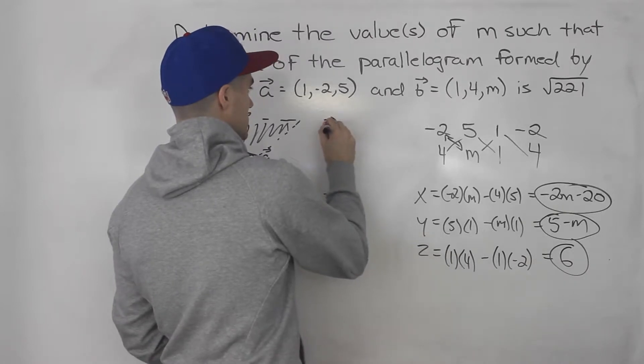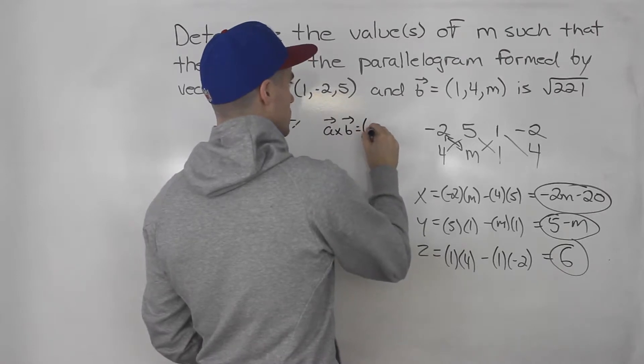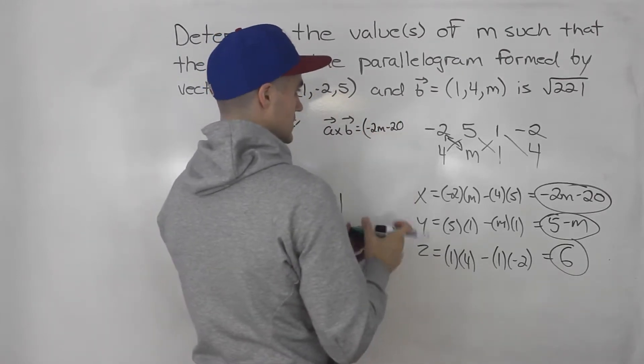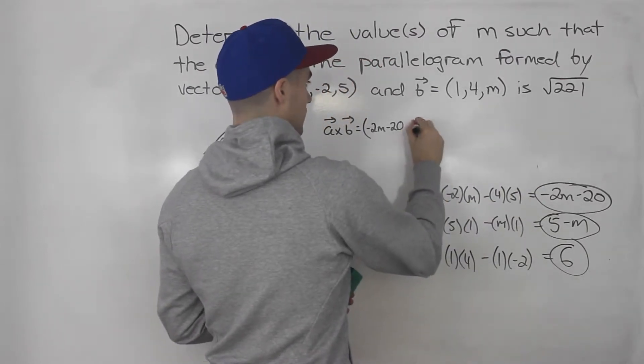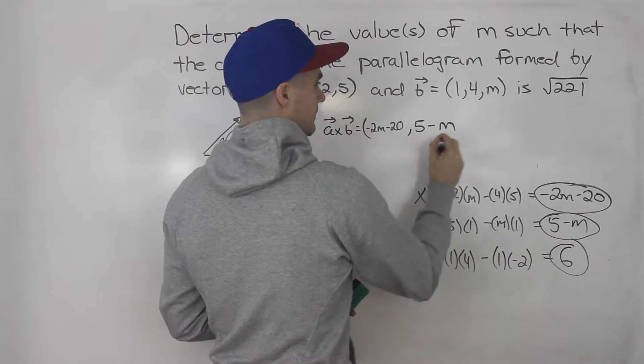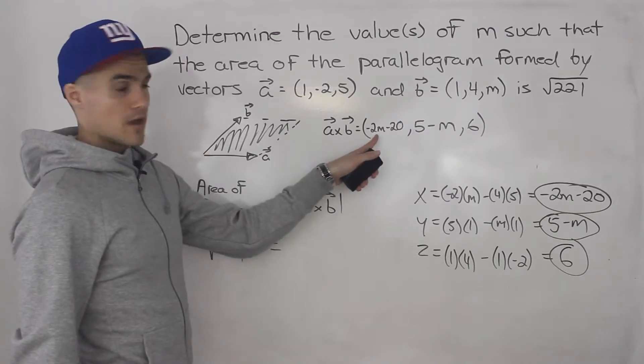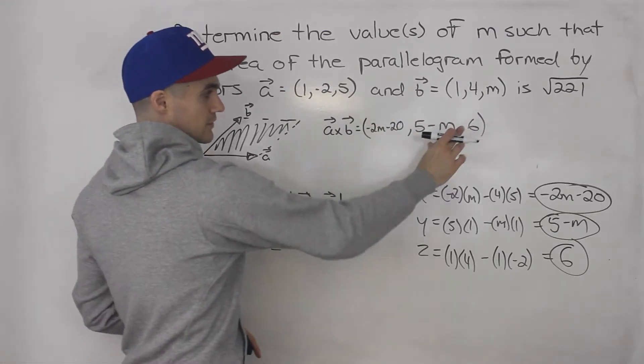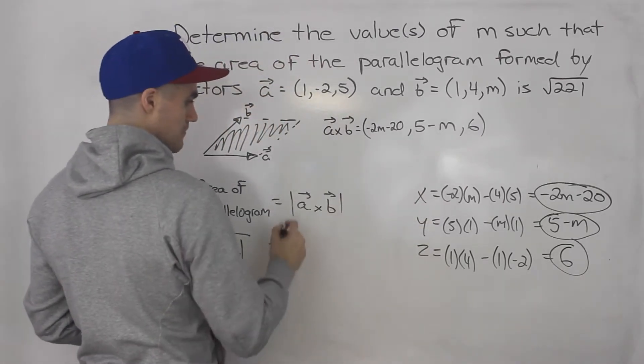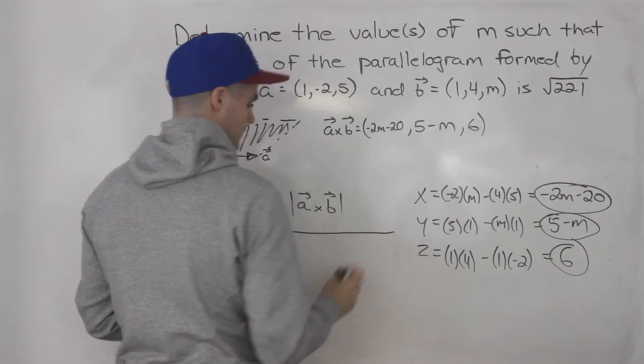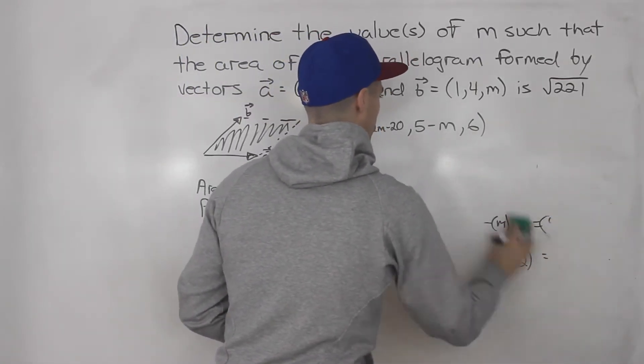We know the cross product of a and b is negative 2m minus 20, then we got 5 minus m, and then we got 6. But to plug it into this formula here, we need the magnitude of this vector. Notice this is a vector here, x component, y component, z component. So we got to find the magnitude of that. Magnitude of a vector is the square root of all of the components squared and then summed up.